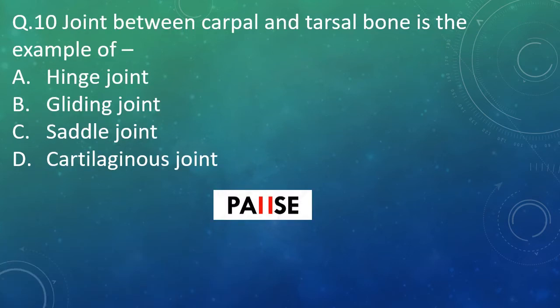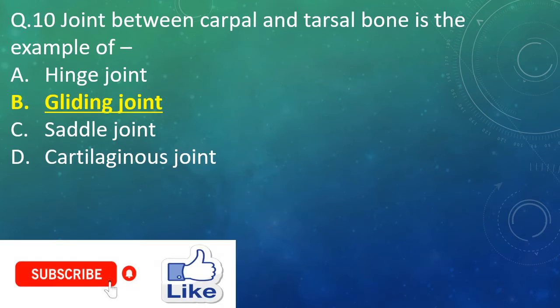Question 10: The joint between carpal and tarsal bones is an example of which type of joint? Option A: hinge joint. Option B: gliding joint. Option C: saddle joint. Option D: cartilaginous joint.